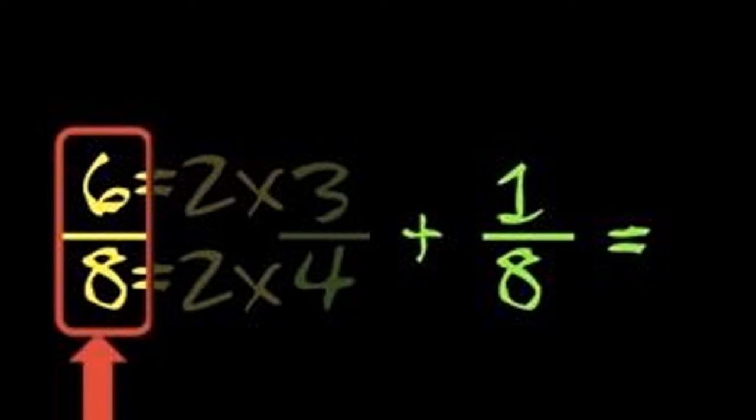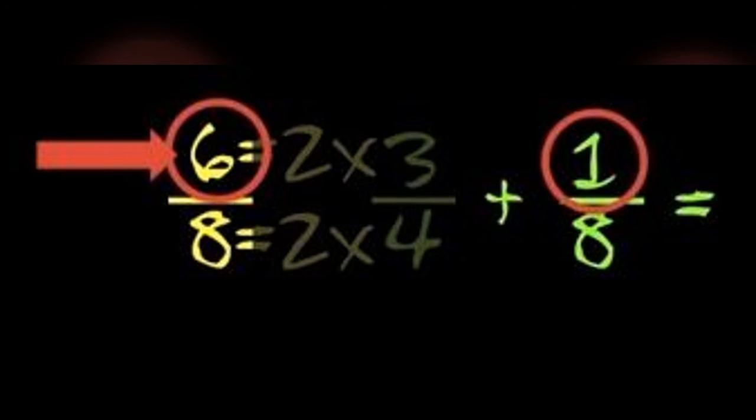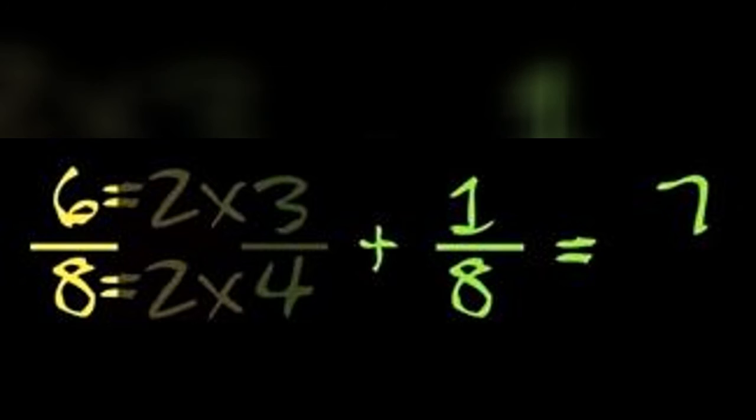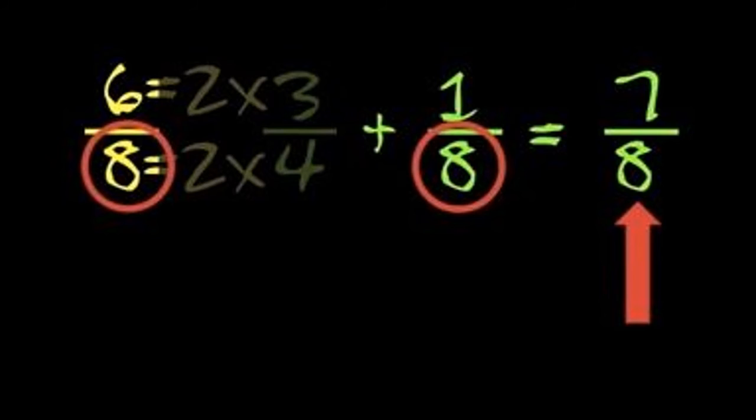I can't believe there's such an easy way, eight on both sides, I start up top, add the numerators straight across. Six plus one and you know that's seven, you're almost done, eights on the bottom so we keep them the same, seven eighths is the answer you dominate.